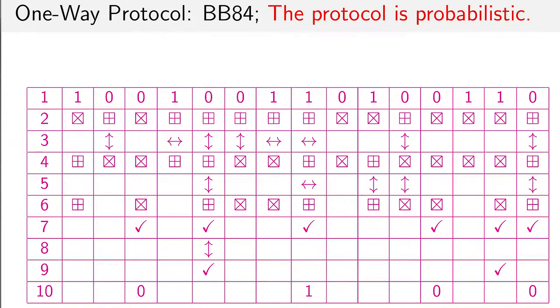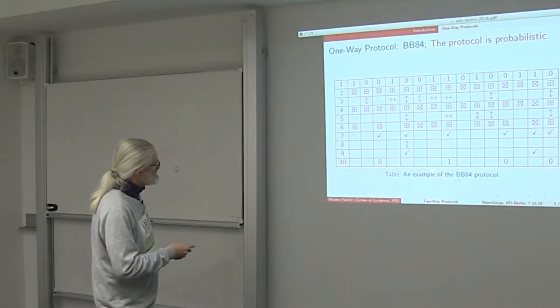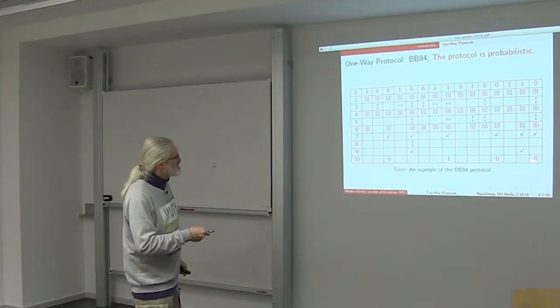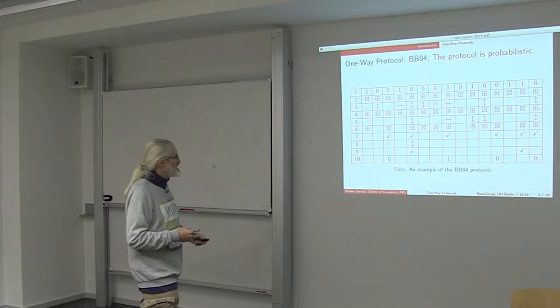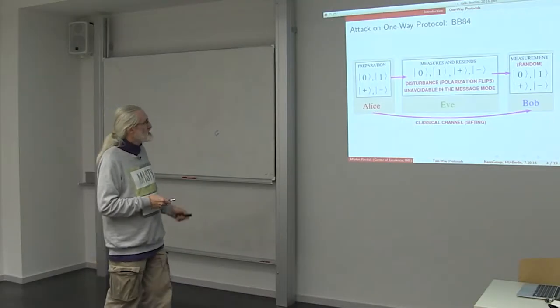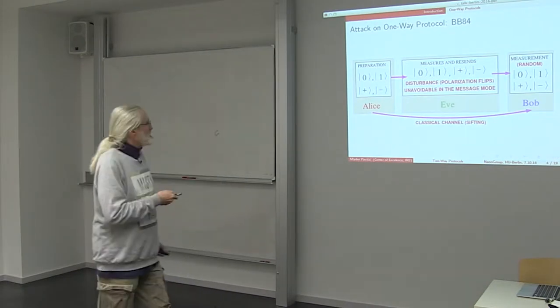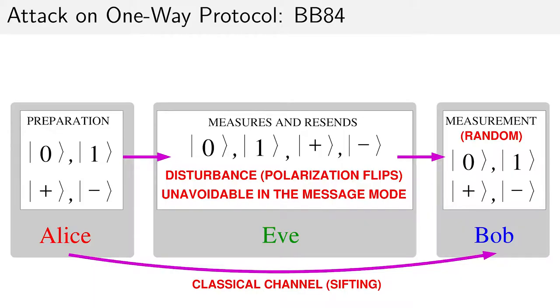When in several steps they agree on the basis, they obtain the results shown in the last row. So what's essential here for our consideration of two-way protocols is the way in which Eve can eavesdrop on the messages sent between Alice and Bob.